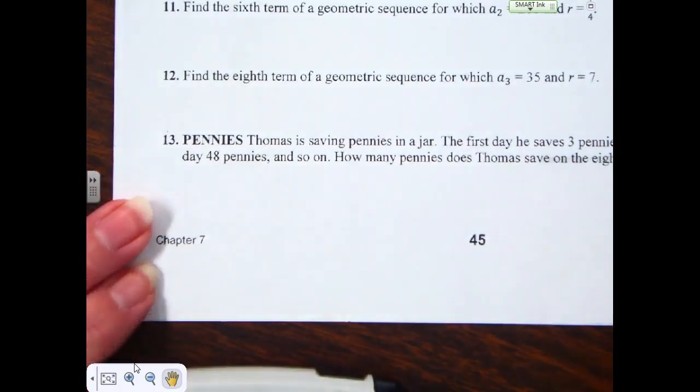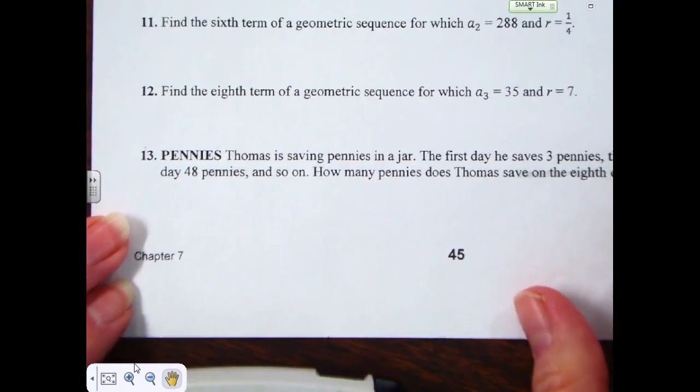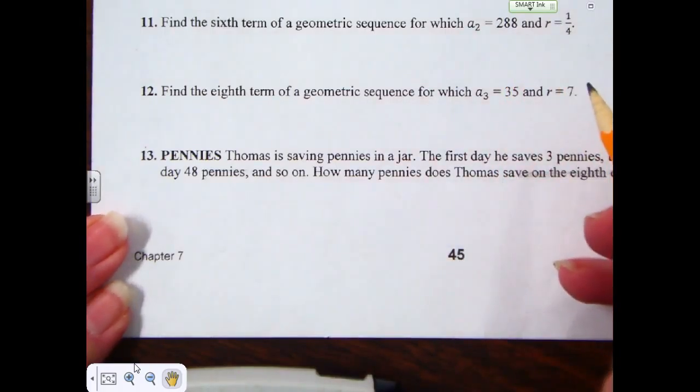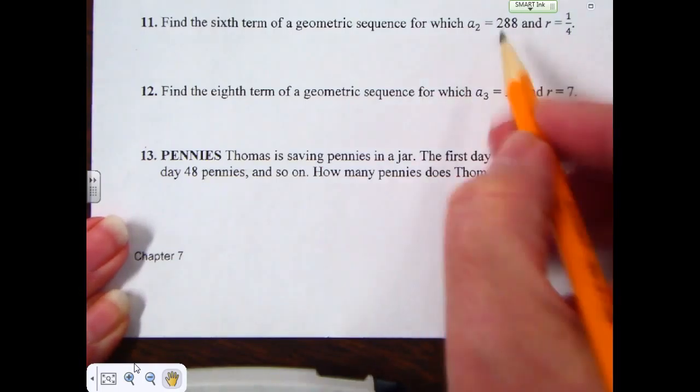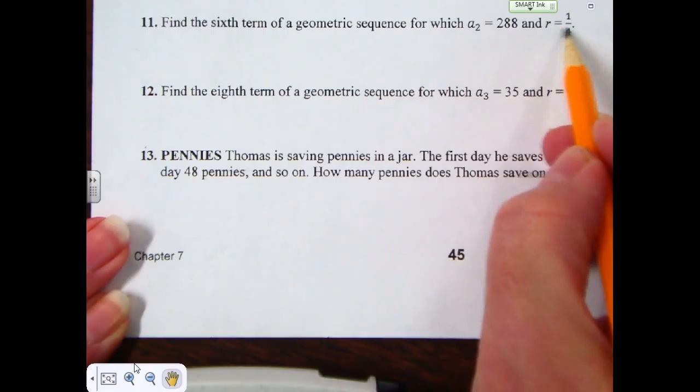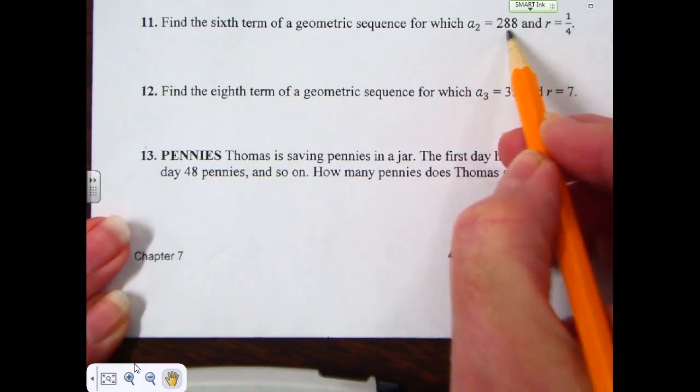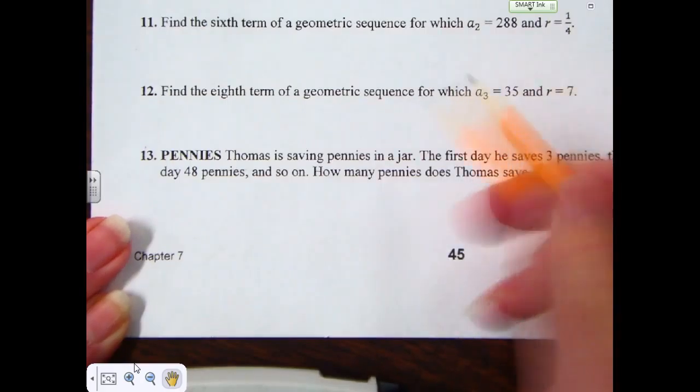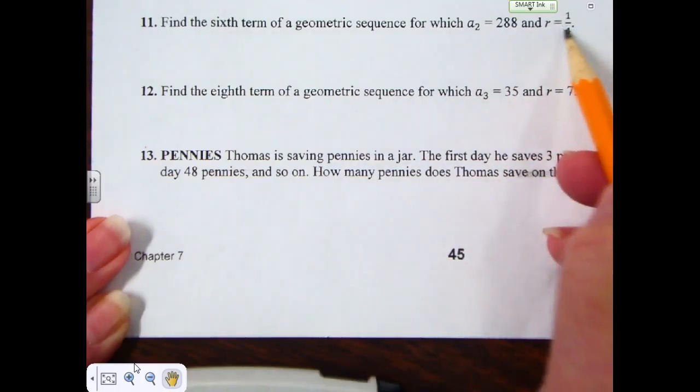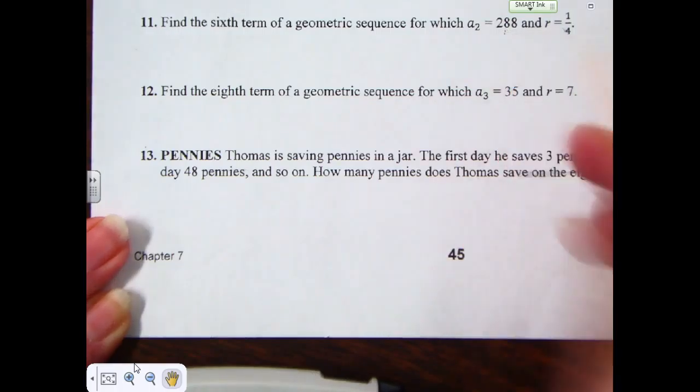Number 11 says to find the 6th term of the geometric sequence, for which A sub 2 equals 288 and R equals 1 fourth. Now, I look at this and say, but I don't have the first term. I can't multiply by the common ratio, this 288, because if I do, that will give me the third term, not the first term. If I want to find the first term, I have to do the inverse of this multiplication. Instead of multiplying by 1 fourth, I would have to multiply this 288 by 4. I would have to multiply by the inverse of the common ratio.